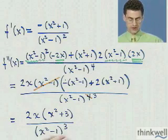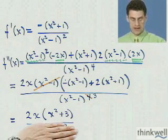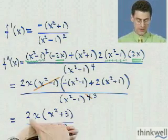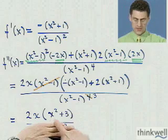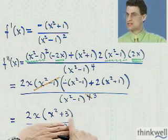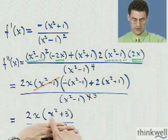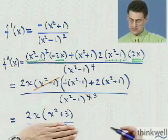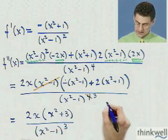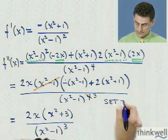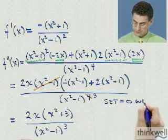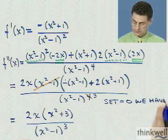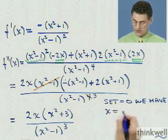Well this thing equals 0 when the top is 0. And when is the top 0? Well either x is 0 or this is 0. But notice that x squared plus 3 is never 0, because squared is always non-negative. So in fact, the only solution we get, so if we set equal to 0, we have that x equals 0.